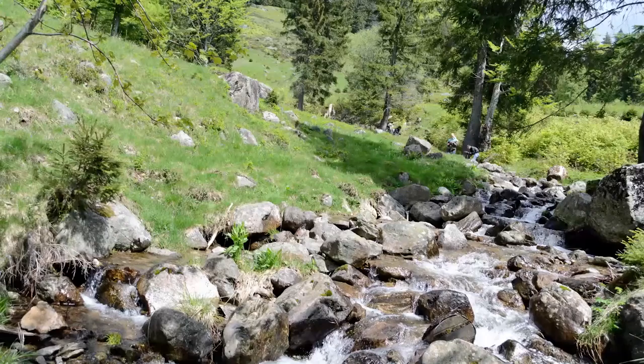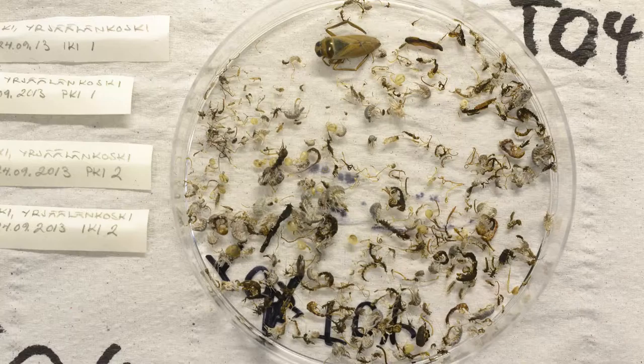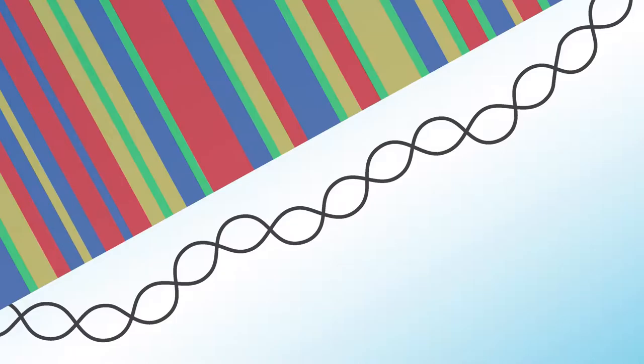Macro-invertebrates are very important indicators for stream health. However, they are difficult to identify based on morphology. Therefore, we are developing DNA-based methods for species identification.